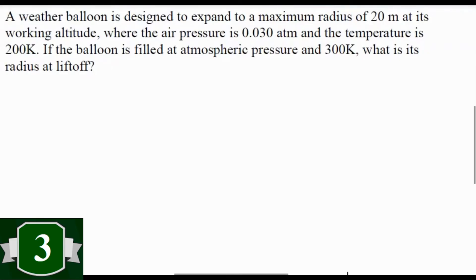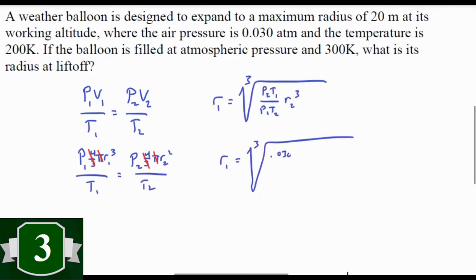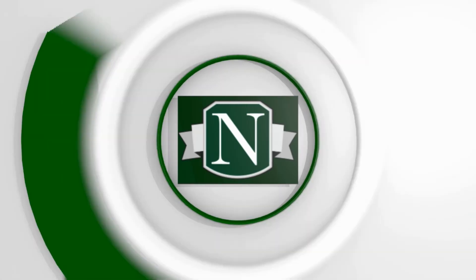If a weather balloon is designed to expand to a radius of 20 meters at working altitude where the air pressure is 0.030 atmospheres and the temperature is 200 Kelvin, if it's filled at atmospheric pressure on the ground where it's 300 Kelvin, what is its radius at liftoff? For this problem, all you really need is the universal gas law: P1V1 over T1 equals P2V2 over T2. And then the volume of a sphere is four thirds pi r cubed. Plug in, cancel, solve, plug in your numbers, and you get 7.11 meters. Done.